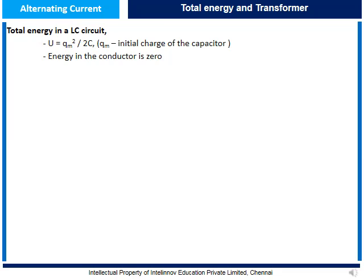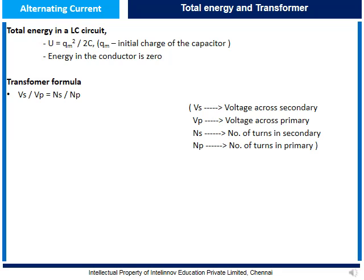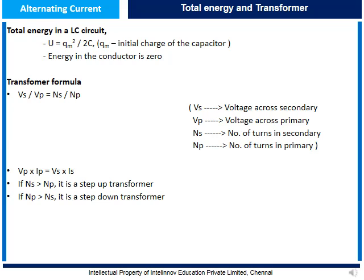Let us understand the transformer formula. The basic transformer formula is Vs/Vp equal to Ns/Np, where Vs is the secondary voltage, Vp is the primary voltage, Ns is the number of turns in the secondary, and Np is the number of turns in the primary. Also, Vp × Ip equals Vs × Is. If Ns is greater than Np, it is a step-up transformer. If Np is greater than Ns, it is a step-down transformer.